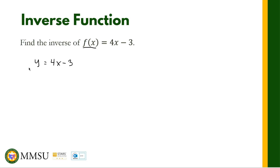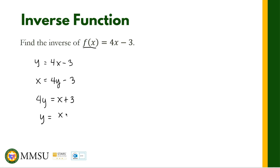After interchanging x and y, solve for y in terms of x. We get 4y = x + 3, then divide both sides by 4: y = (x + 3)/4. Therefore the inverse function is f⁻¹(x) = (x + 3)/4.